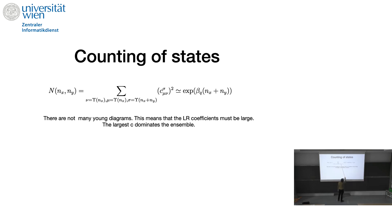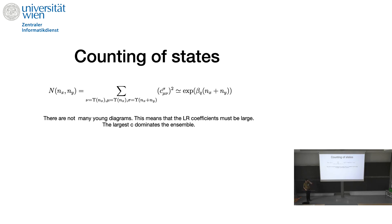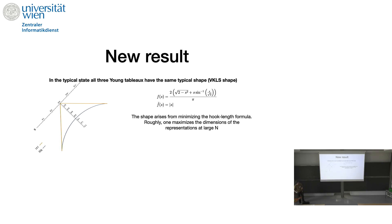It turns out there are not very many Young diagrams. Young diagrams are partitions of L — they go like e^(√L). But the number of states went like e^L. So square root of L is not enough, meaning these Littlewood-Richardson coefficients can get large. That suggests there might be a Young diagram shape that dominates.